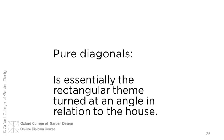Finally, we'll look at the diagonal theme. This is essentially the rectangular theme turned at an angle in relationship to the house. However, when lines of pure diagonal theme connect to the house, we're in danger of creating weak, acute angles or nasty corners. So therefore, modified diagonals may be more appropriate. These combine both the rectangular and the pure diagonal theme, which offer a more satisfactory relationship with the building.